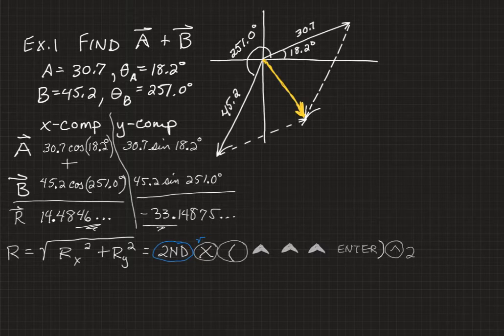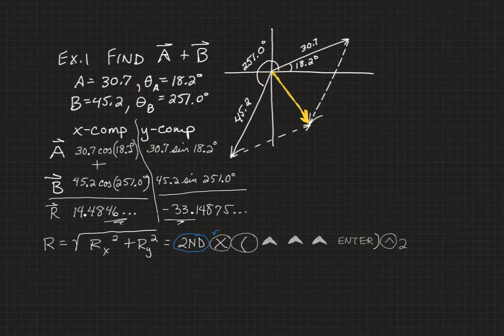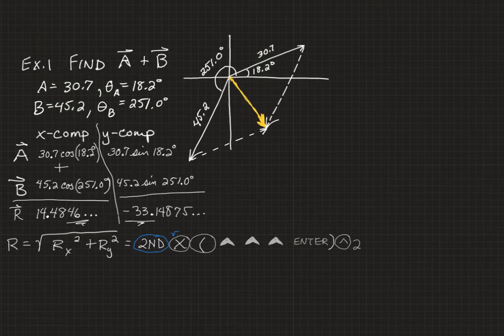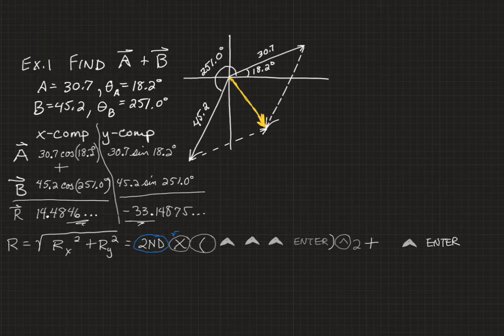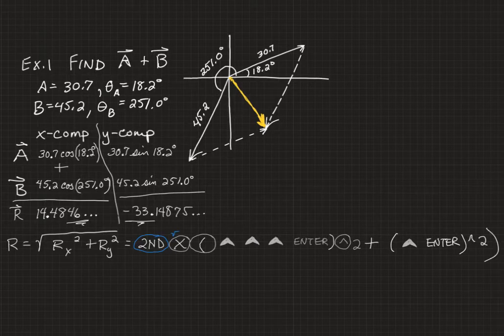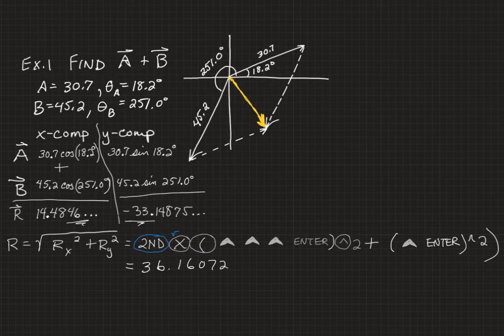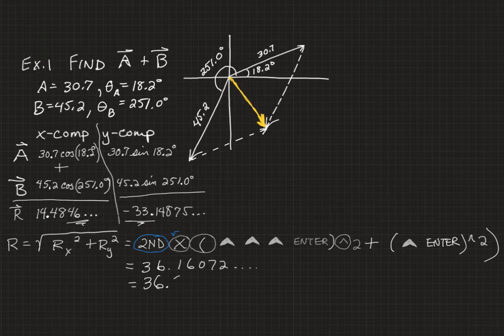Then hit caret two and that will square that part of what you're working with. All right, I am running out of room again. Let's move this over a little bit. The next thing we need to do is add. To make this short and quick, you're going to do a parenthesis here, a parenthesis here, a caret two and close that parenthesis. That will close your square root and you will have a value of 36.16072 something, something, something. But when we round to three significant digits, we get 36.2.